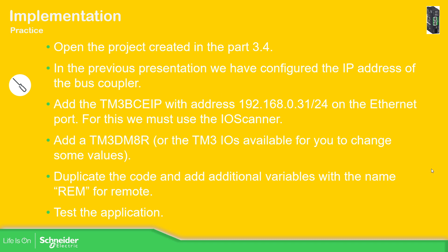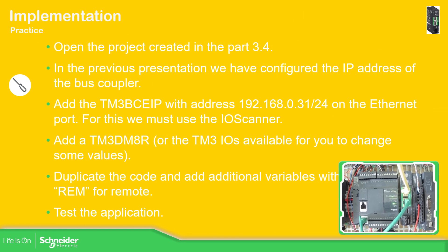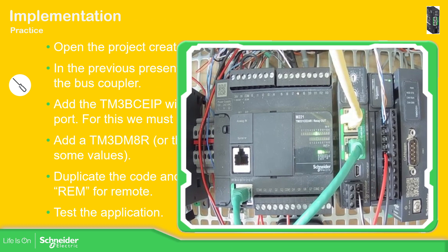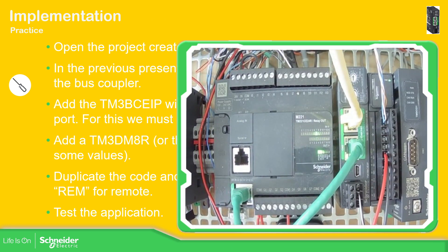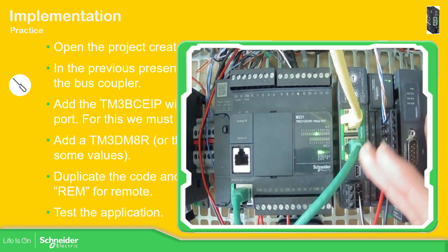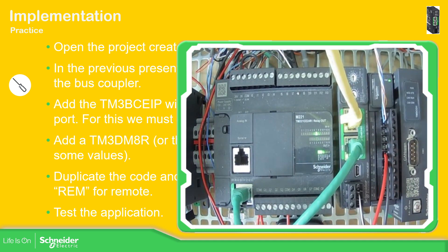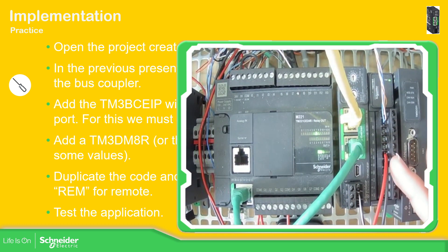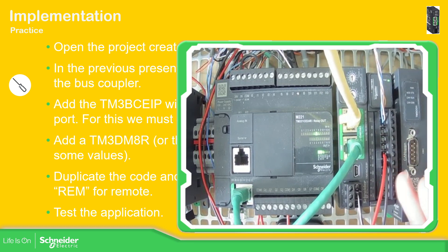What I'm going to do is program the M221, connect it with the TM3 bus coupler, and add a TM3 module — which is the one I have here. The M221 is connected over Ethernet to the bus coupler, and this is also connected to my laptop. Next to the bus coupler you can see the TM3 module, and I'm going to read information from the bus coupler.